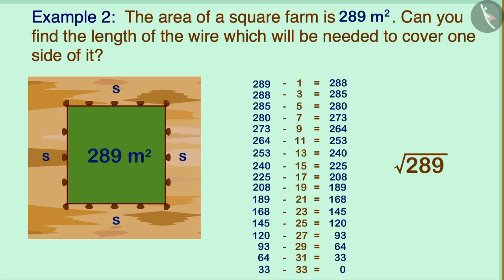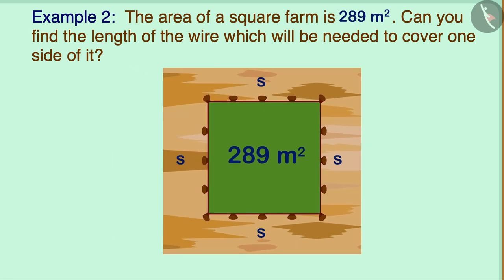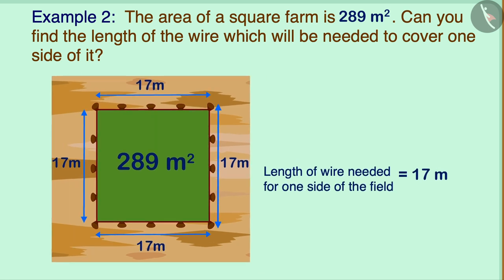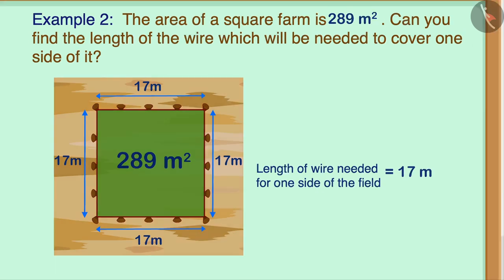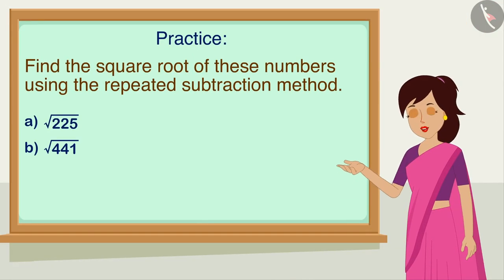Therefore, the length of one side of the square field is 17 meters, which means the length of wire needed to cover one side of the field is 17 meters. Now for practice, try to find the square root of these numbers using the repeated subtraction method.